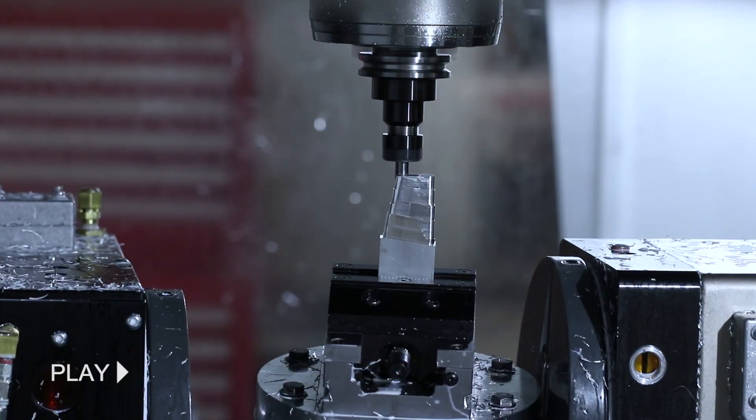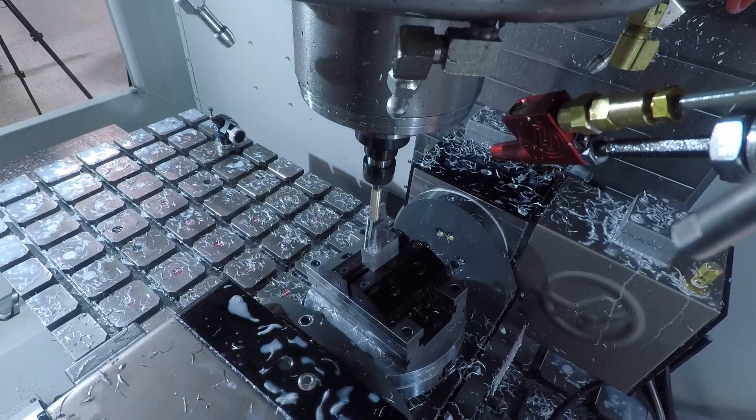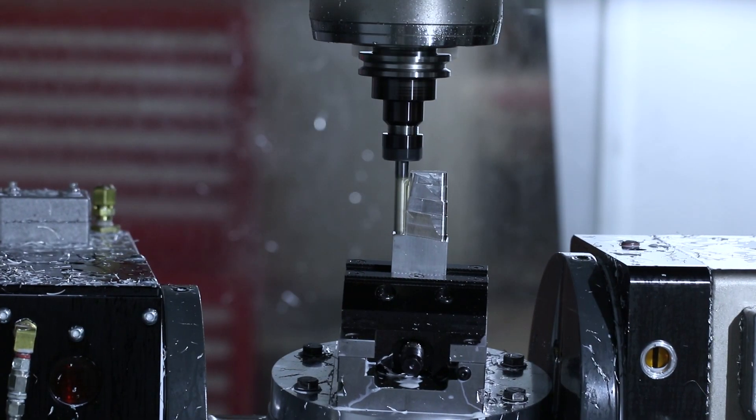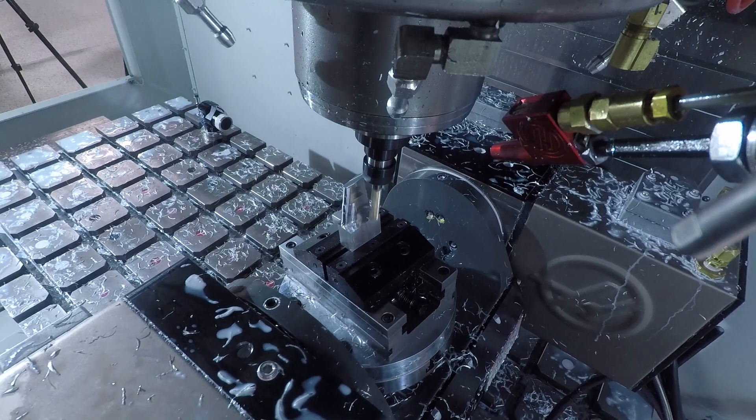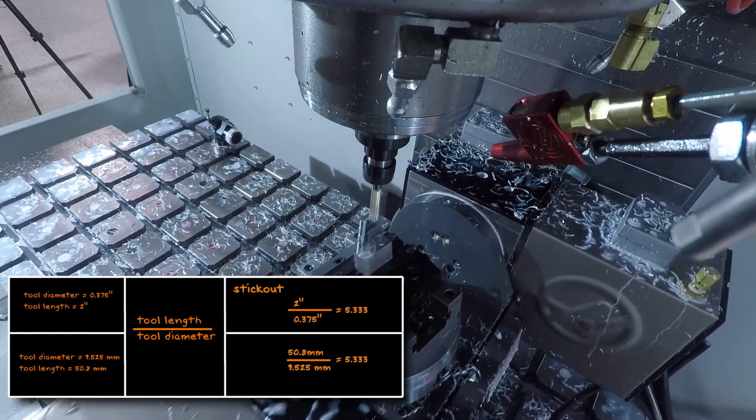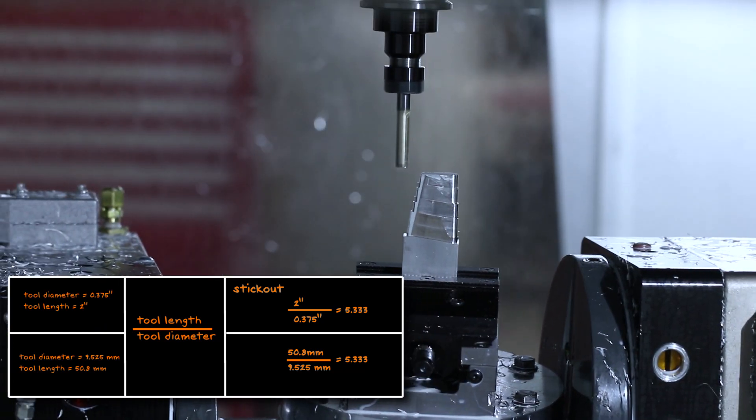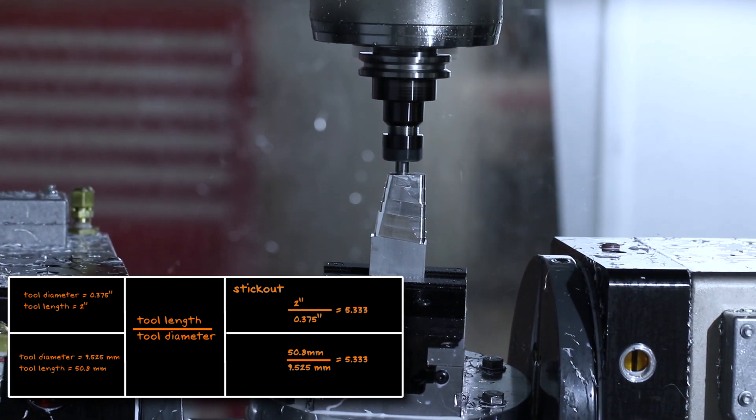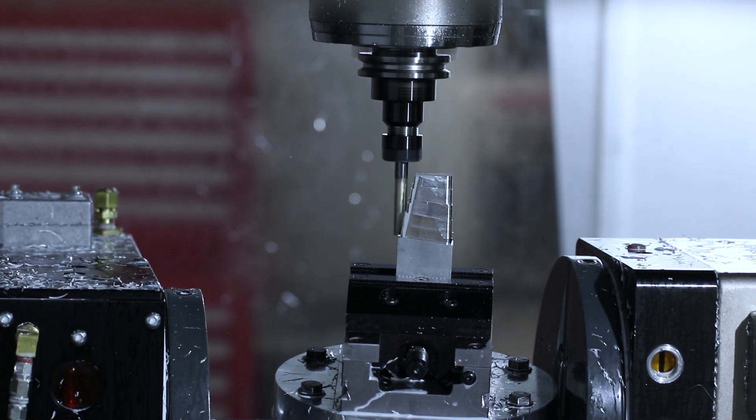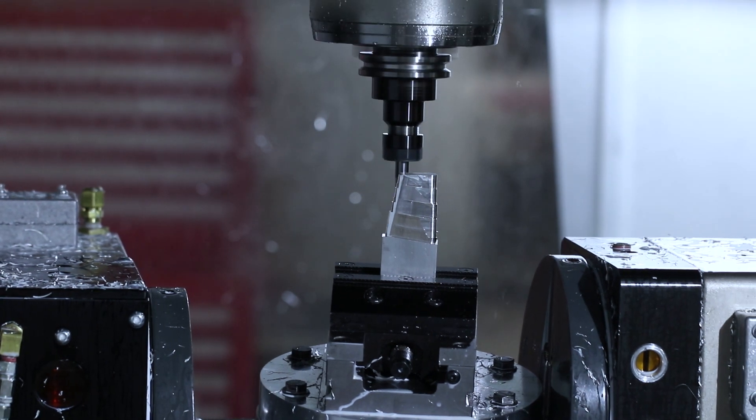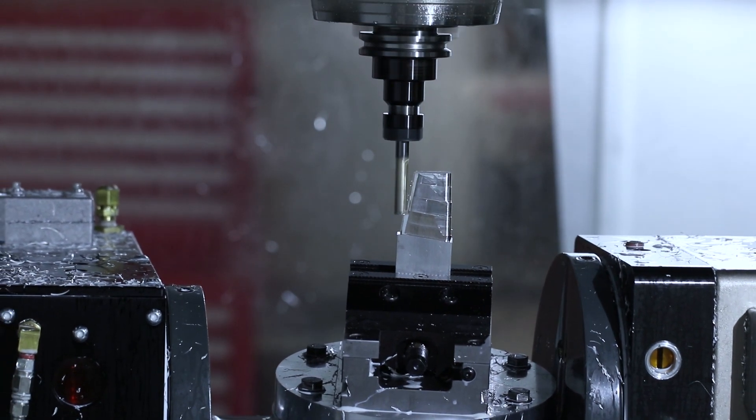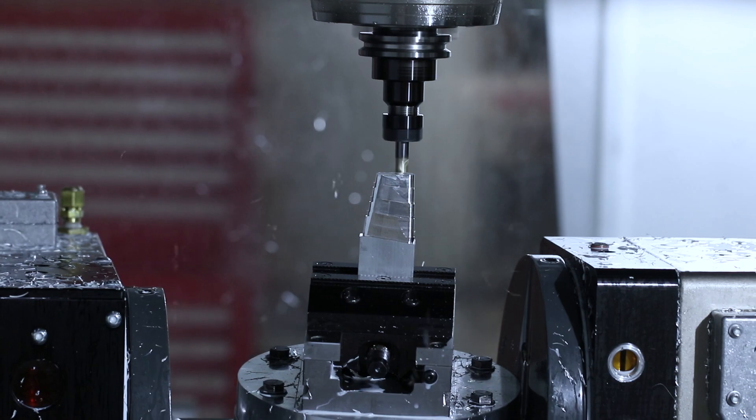You can see here we're hogging out with about a two inch gauge length stick out. And with a three eighth inch tool, two inches long, we're over five times stick out. That's not ideal. You really like that number to be four or less. But this is one of the other areas where five axis work can really help with your machining workflows and parts, even if you don't have complex shapes.